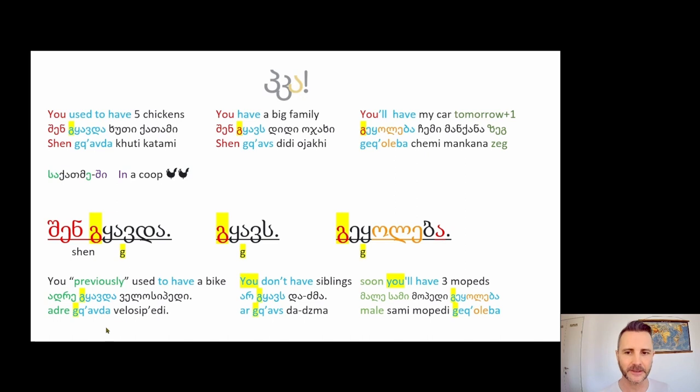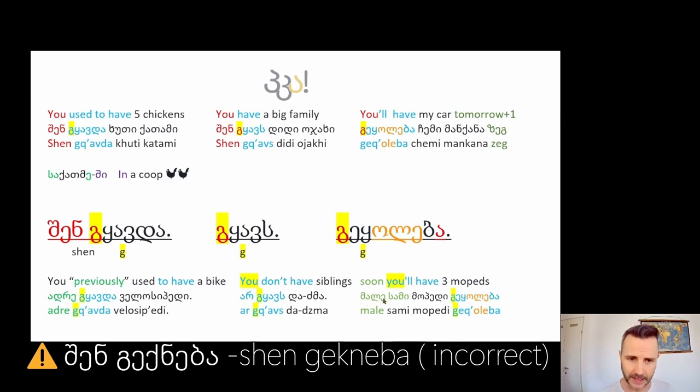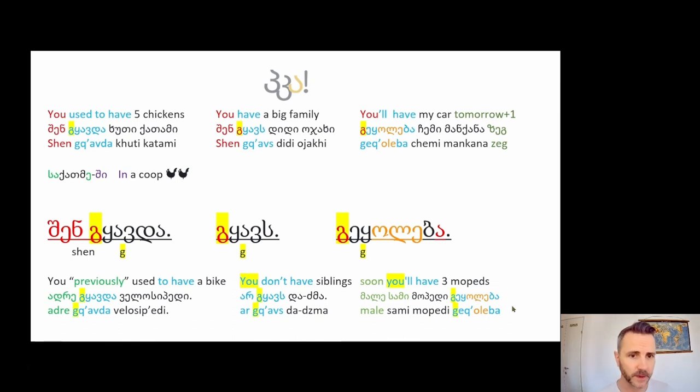Here's another example using Adre. Adre shen gchavda velosipedi. You previously used to have a bike. You don't have a bike anymore. You no longer have a bike. Here again we're going back to the original Dedamamishvili, my siblings. Shen Ar Gchavs Dadzma. You don't have any siblings. Soon. Máale. Máale Sámi Mópedi Gech oleba. In this case it suggests that you already have two and soon you're going to have three.